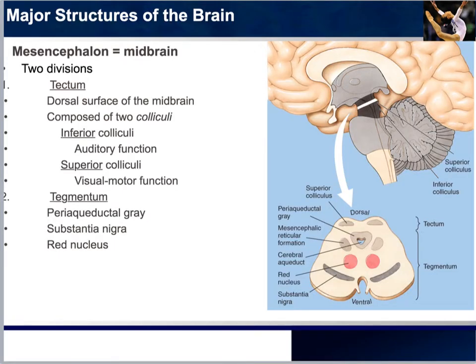We now work our way up to the midbrain — the mesencephalon — which is made up of two divisions: the tectum and the tegmentum. The tectum is the dorsal surface of the midbrain, and it is composed of two colliculi: the superior colliculi visible here, and the inferior colliculi, which are not directly seen but are indicated here.